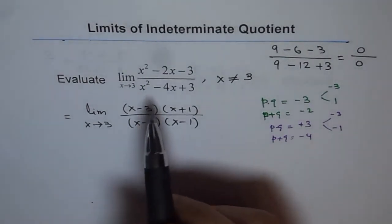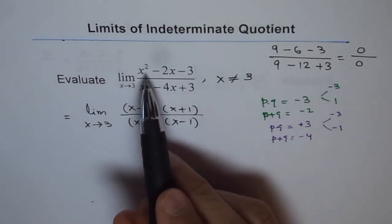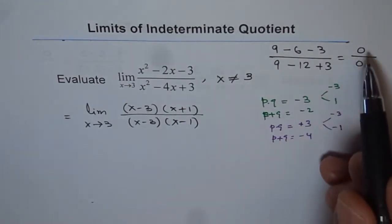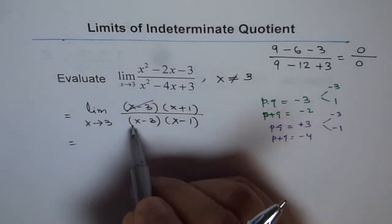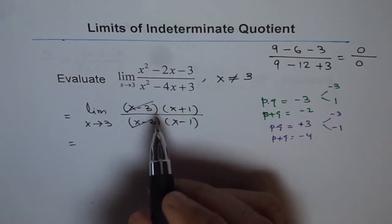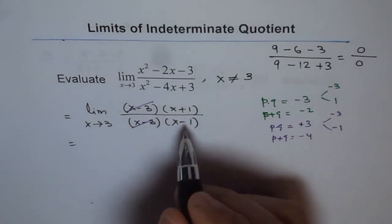So as expected, x minus 3 is a factor in numerator and also in denominator. That's why we got 0 over 0, right? So we can now cancel this. Or we say x minus 3 divided by x minus 3 is 1. 1 times anything is that expression.